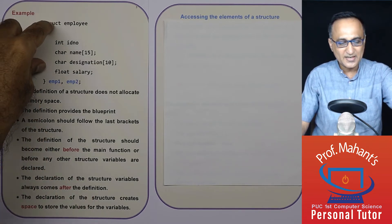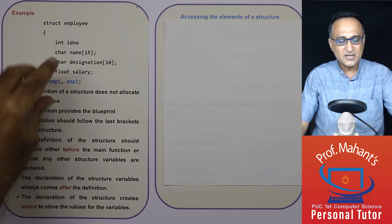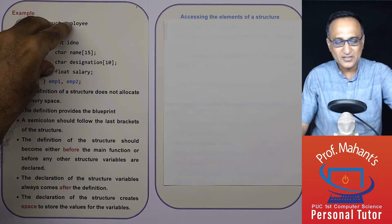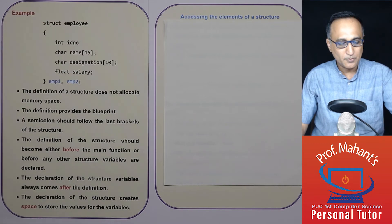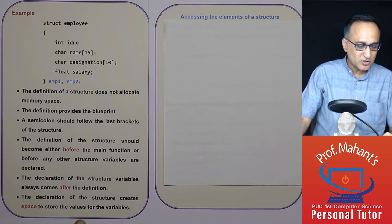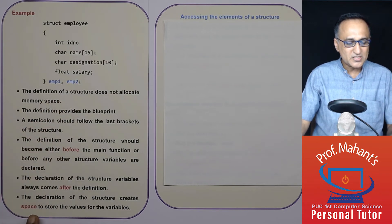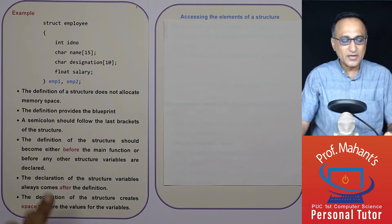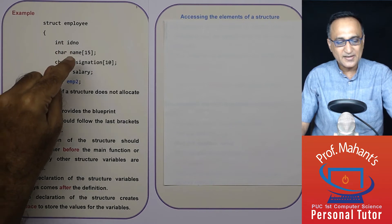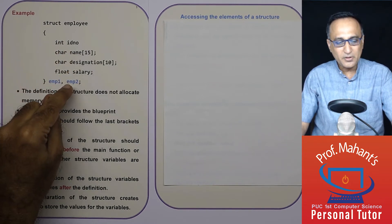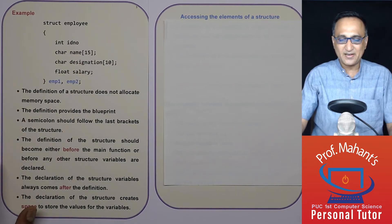The definition is written first, and then the declaration of the two structure variables comes after the definition of the structure model or blueprint. The structure variables EMP1 and EMP2 are allocated memory space so that EMP1 can store ID number, name, designation, and salary. EMP2 can also store ID number, name, designation, and salary.